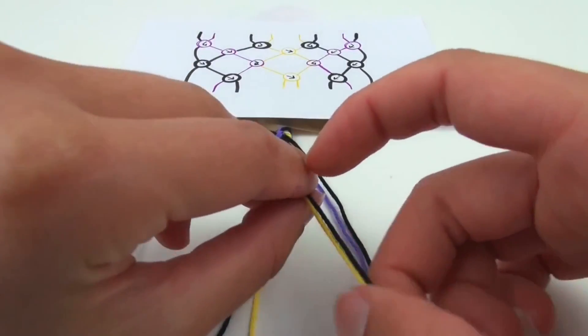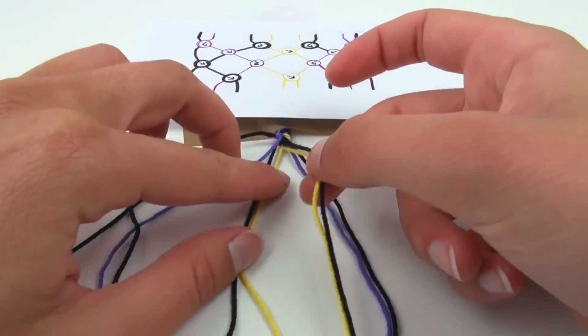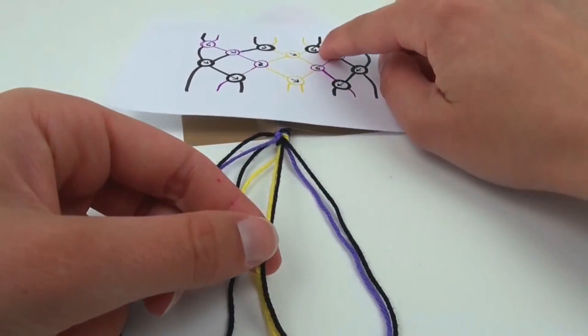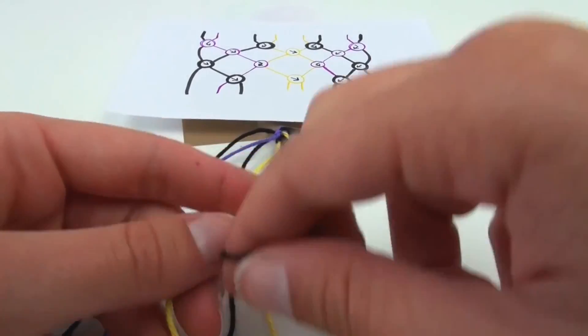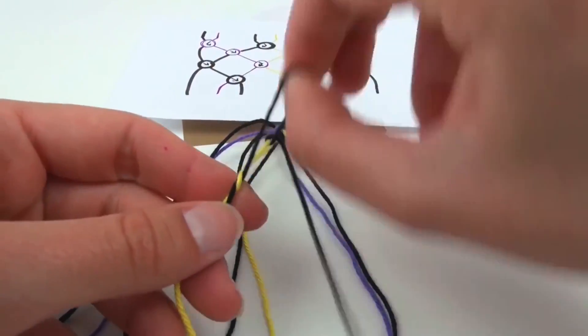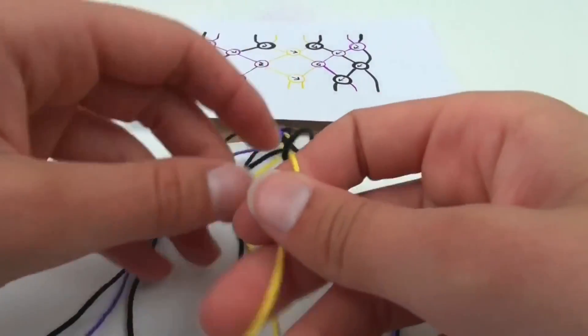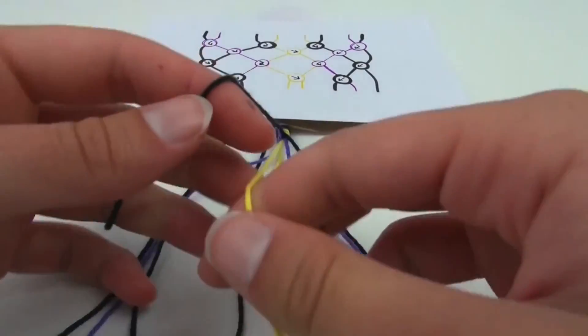Then we have the other yellow one and the black string. So we're going to do the black one over the yellow one because of the arrow, towards the left and then towards the right.